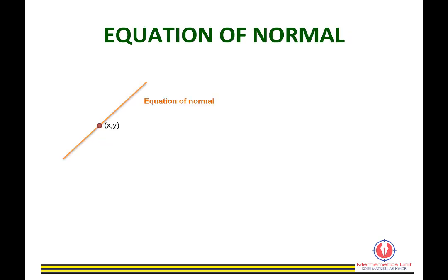For the Equation of Normal, we also use the straight line formula y minus y1 equals m times (x minus x1). We substitute the x and y values into x1 and y1. For the gradient of normal, mn equals negative 1 over the gradient of the tangent.